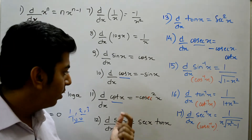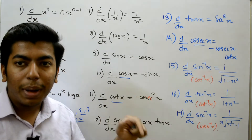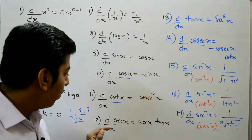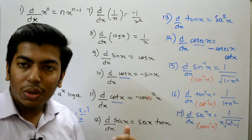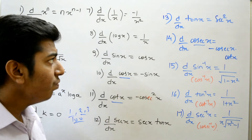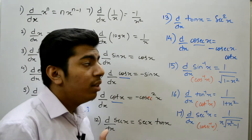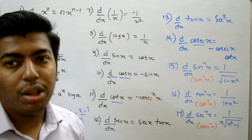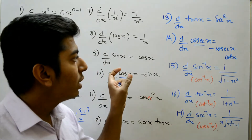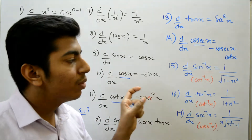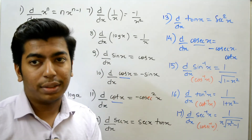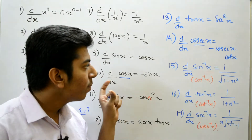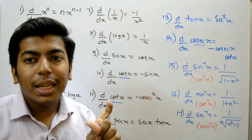The derivative of cos x is minus sin x. The derivative of cot x is equal to minus cosec squared x. The derivative of sec x is equal to sec x tan x. The derivative of tan x is sec squared x. The derivative of cosec x is minus cosec x cot x.